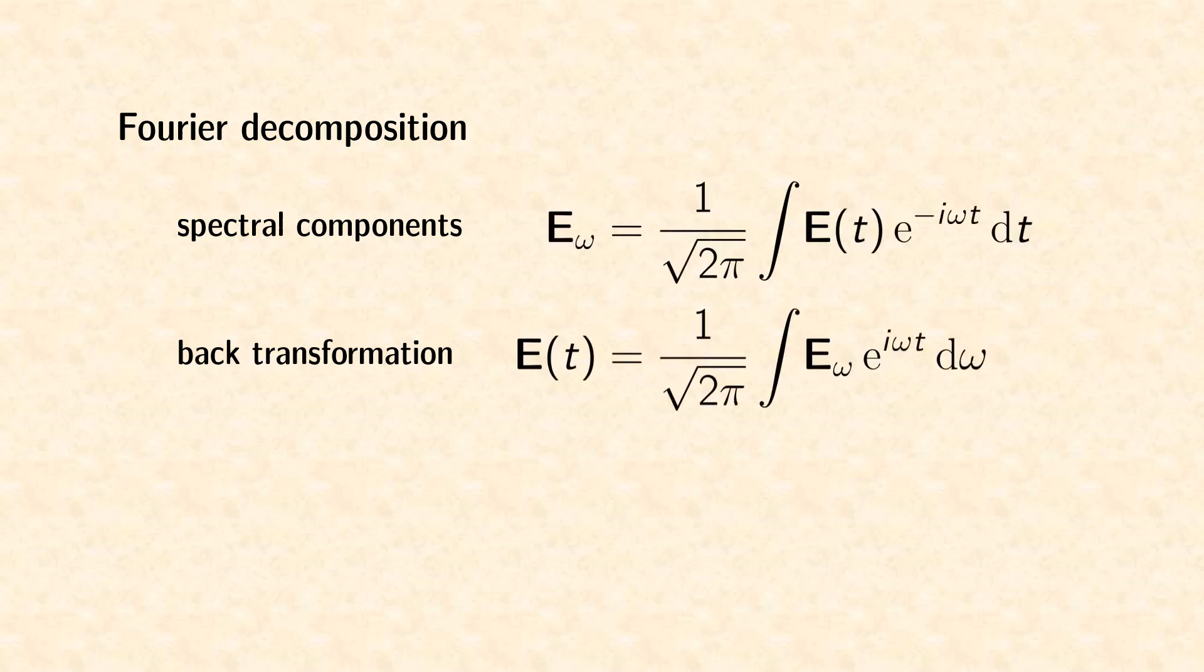Any waveform can be decomposed in its harmonic spectral components by Fourier transformation. Since signals with different frequencies do not interact in linear media, it does not matter at which point of the signal path this decomposition takes place.